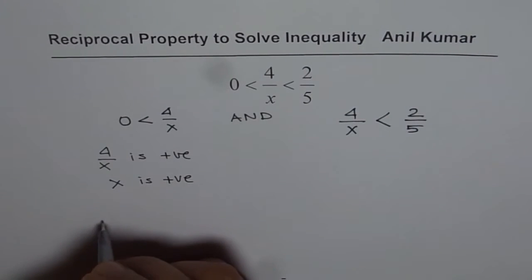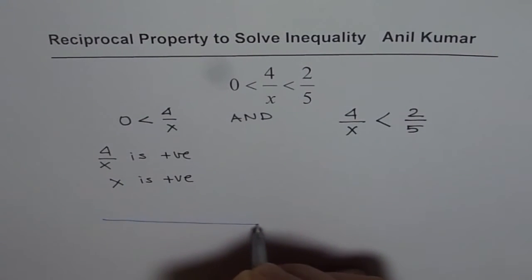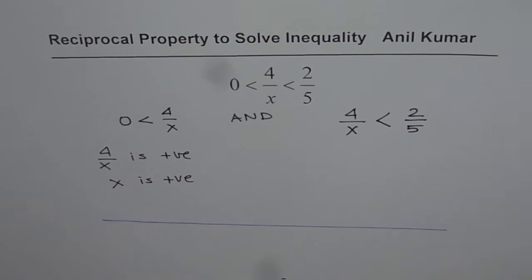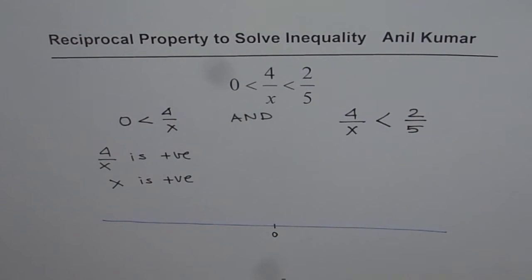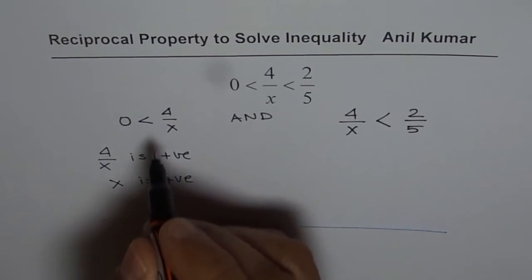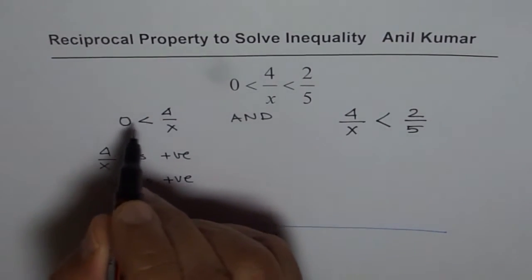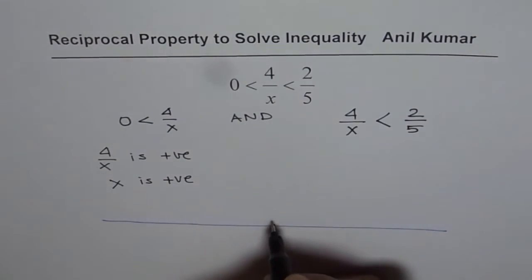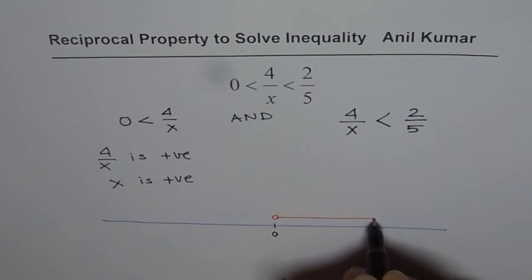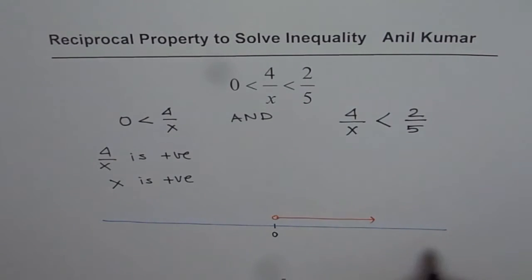Let me show it on a number line. On a number line, if this is 0, then the value of x from the left side condition is that it should be positive — it means on the right side of the number line.